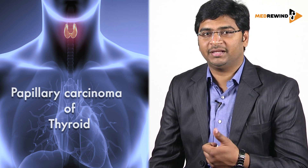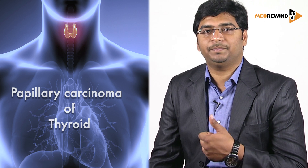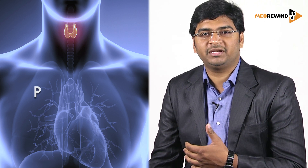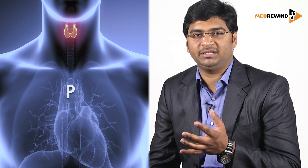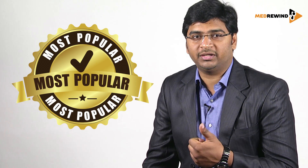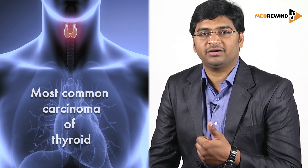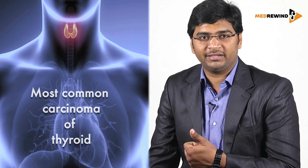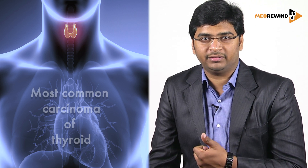The word papillary starts with P, so all the features can be remembered by the letter P. The first P is 'Popular' — that is, the most common variant of thyroid neoplasm is papillary carcinoma of thyroid.